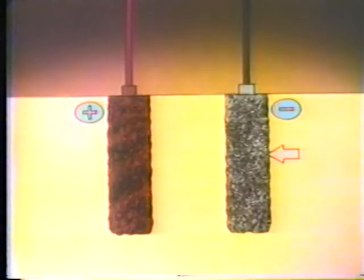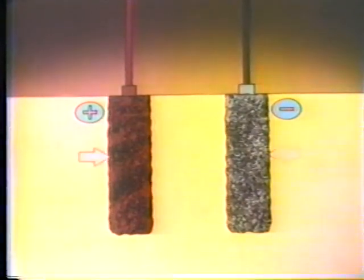When the plates are originally constructed, they're both composed of lead oxide, a dull grayish material. In this form, neither plate is electrically active. But when the cell is connected to a source of direct current — with the positive on one plate and the negative on the other — current begins to flow through the electrolyte. The action of the electrical current gradually turns the negative plate into pure spongy lead, and the positive plate turns to lead peroxide.